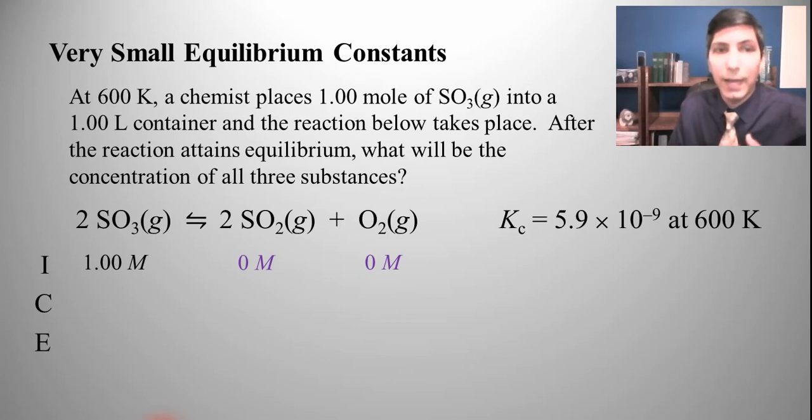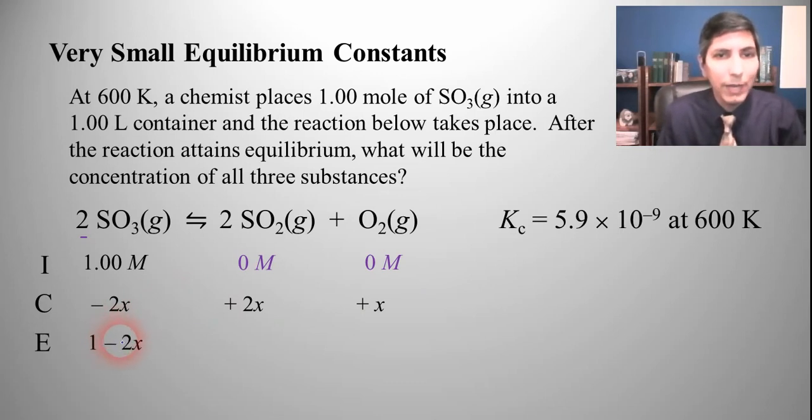We know that the reactant side has to go down and the product side has to go up because you can't go less than zero. So we're going to take the one and subtract 2x because there's a two right here, and this is going to have to go up by 2x and the oxygen is going to have to go up by 1x. So our equilibrium concentrations are 1 minus 2x, for sulfur dioxide it's 2x, and for oxygen it's just x.